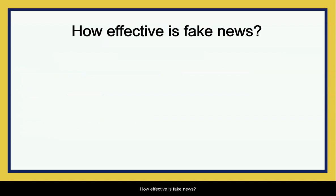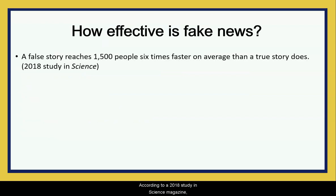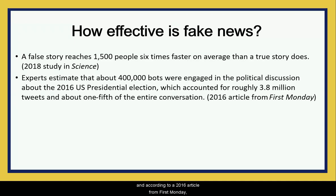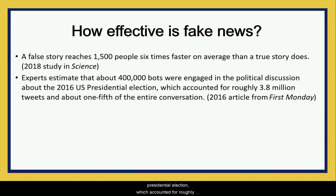How effective is fake news? According to a 2018 study in Science magazine, a false story reaches 1,500 people six times faster on average than a true story does. And according to a 2016 article from First Monday, experts estimate that about 400,000 bots were engaged in political discussion about the 2016 U.S. presidential election, accounting for roughly 3.8 million tweets and about one-fifth of the entire conversation — which is really alarming.